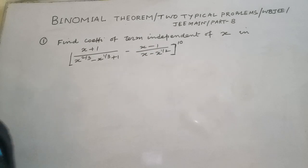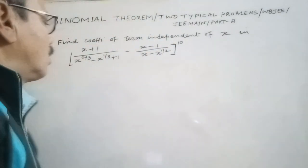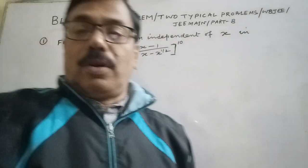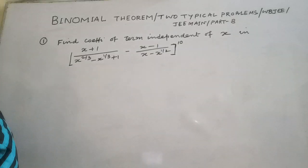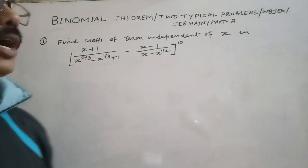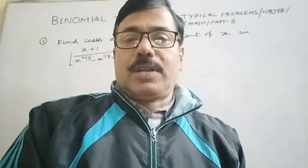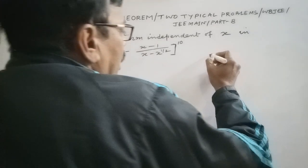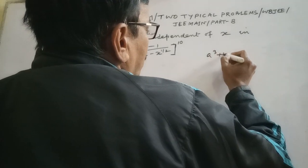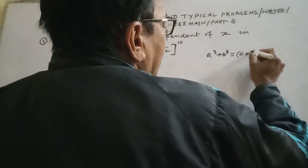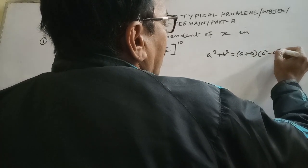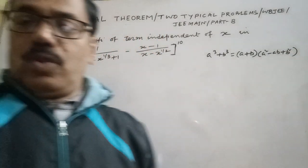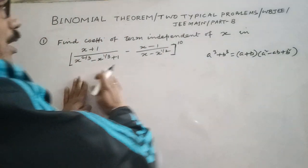We know how to find the independent term, but the given expression is not in simple form. We need to simplify it first. We know that a³ + b³ = (a + b)(a² - ab + b²), and our main aim will be to simplify the given expression.